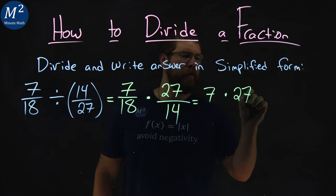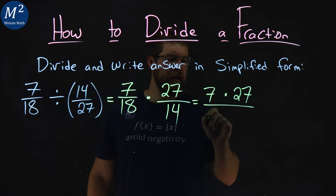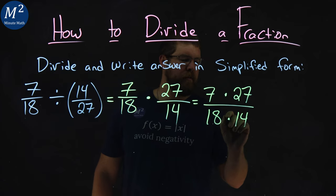7 times a 27, remember we've multiplied across the numerator and denominator when multiplying a fraction, and we have 18 times a 14 in the denominator.